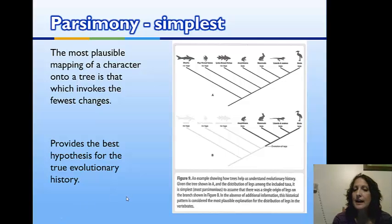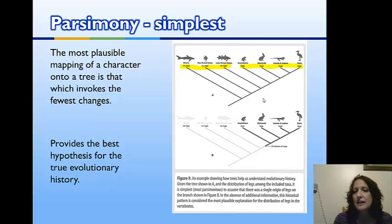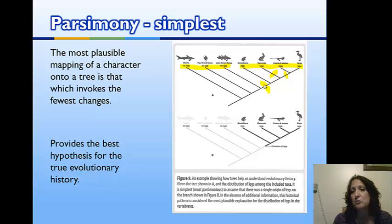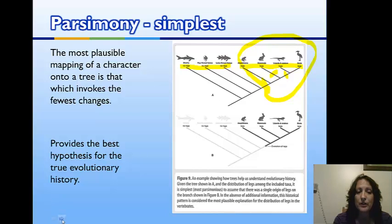One rule used to place organisms on a tree is the principle of parsimony — the simplest explanation. If three organisms lack legs and four have legs, the most logical explanation is that legs evolved once at a single point on the tree. We would not place the evolution of legs in several locations. It's more likely one evolutionary event, with all legged organisms sharing a common ancestor that had legs.